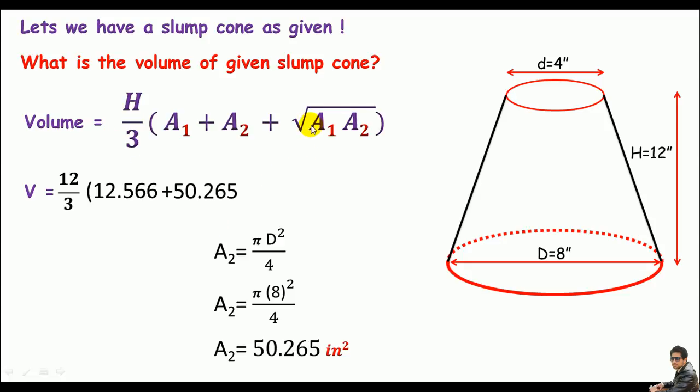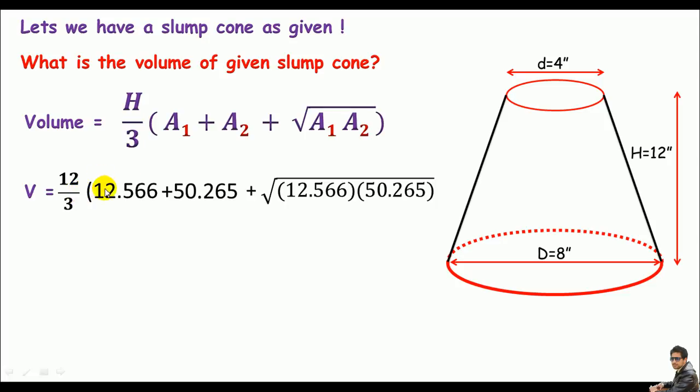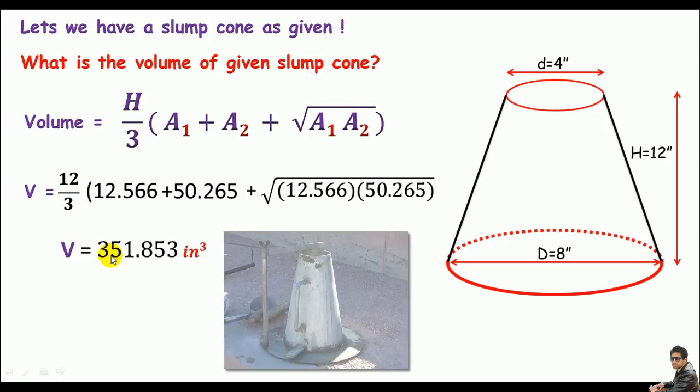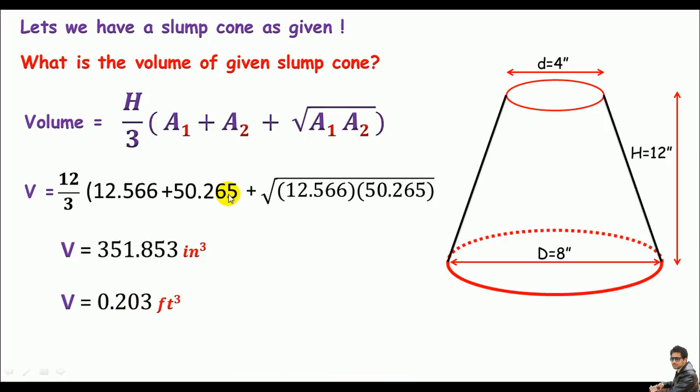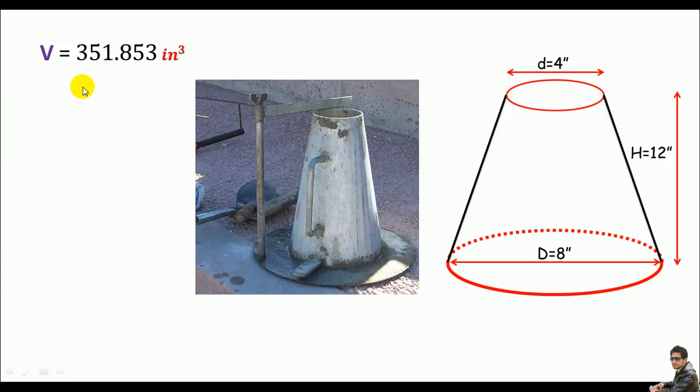Do some math with the given formula and you'll get 351.853 cubic inches or 0.203 cubic feet. So we got the volume of a slump cone as 351.853 cubic inches or 0.203 cubic feet and this is it.